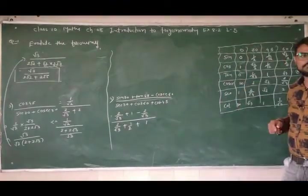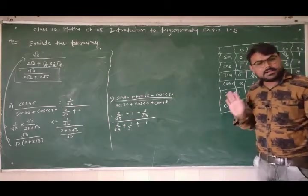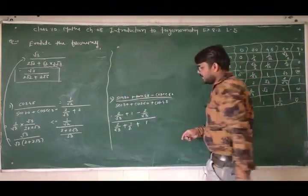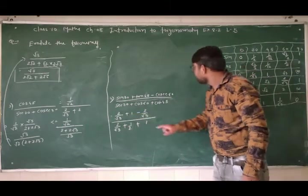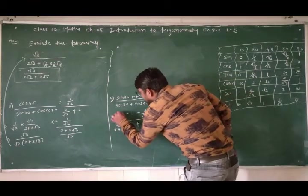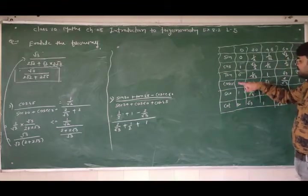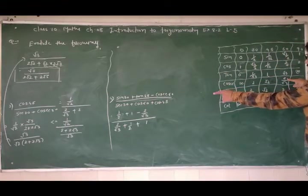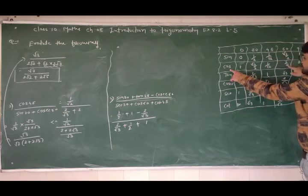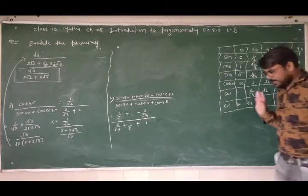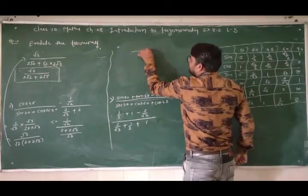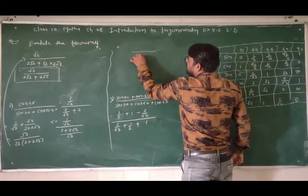ऊपर numerator का LCM लेते हैं: 2√3 मेरा LCM रहेगा। 1/2 के नीचे: 2 है, √3 नहीं है — तो √3 multiply करेगा → √3. Plus: 1 के नीचे कुछ नहीं — तो 2√3 दोनों multiply करेंगे → 2√3. Minus: 2/√3 के नीचे √3 है — तो 2 multiply करेगा → 4. Denominator का LCM भी 2√3: 2/√3 → 2 multiply → 4.